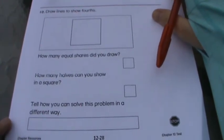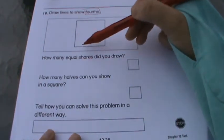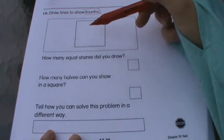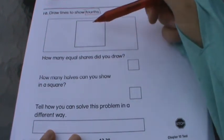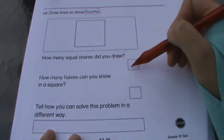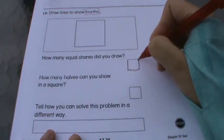And finally, number ten. Draw lines to show fourths. So you need to divide this square into fourths. Draw lines to show me fourths. Once you do that, how many equal shares did you draw? Put that number here. So actually write a number in this box.